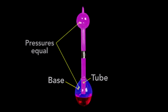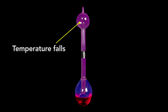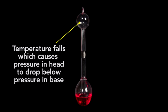So at rest the pressure in these two spaces are equal, but when the bird's beak is wet, the temperature falls, and as I'll explain in a moment, the pressure in the head drops below that in the base and the liquid rises.